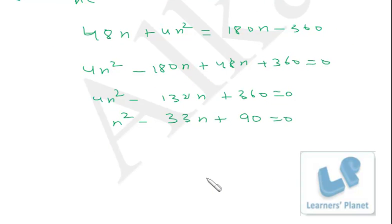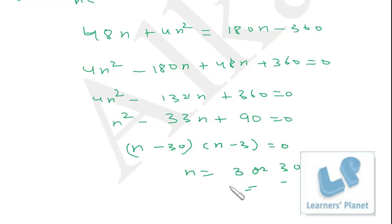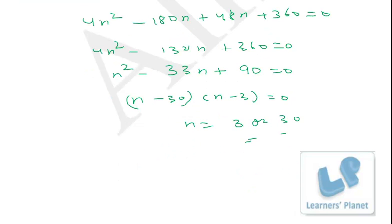Factoring: (n−30)(n−3) = 0, so n = 3 or n = 30.